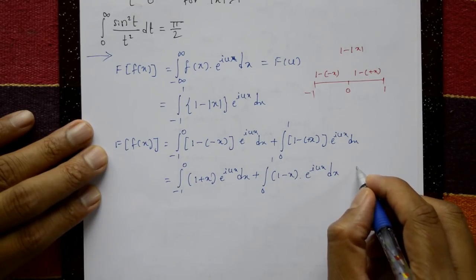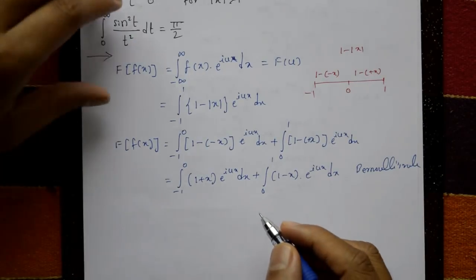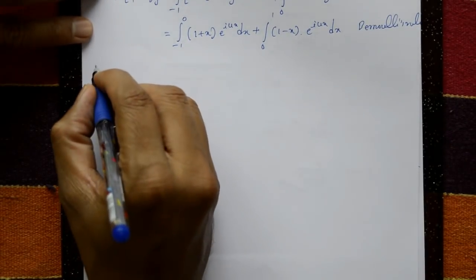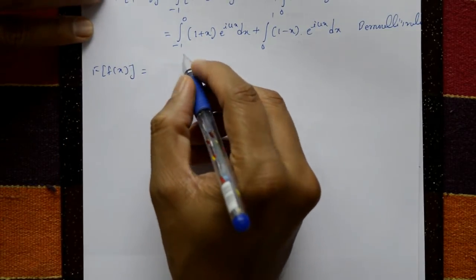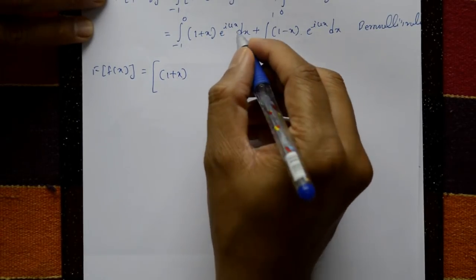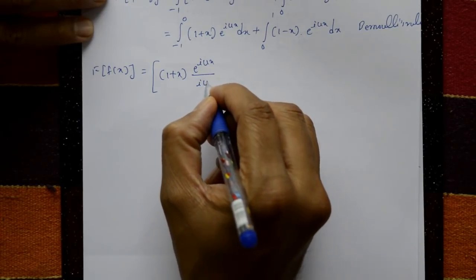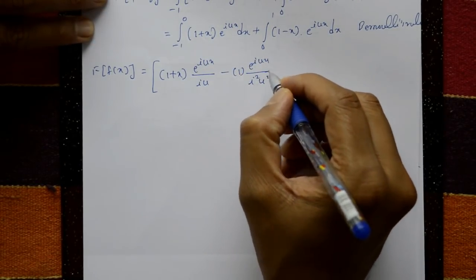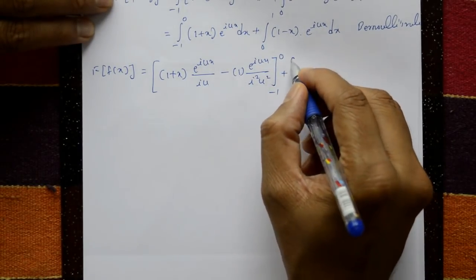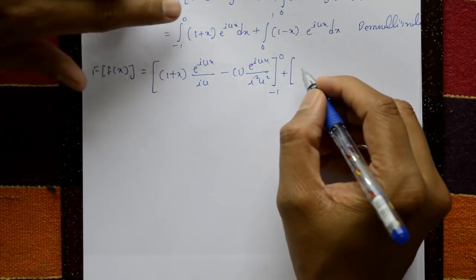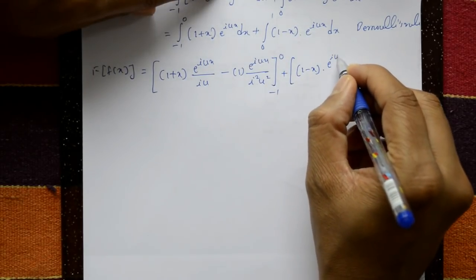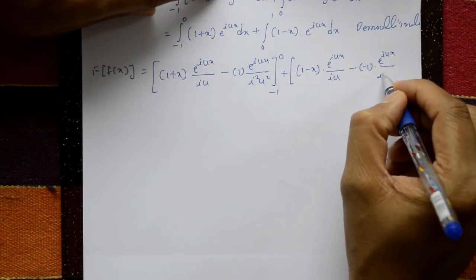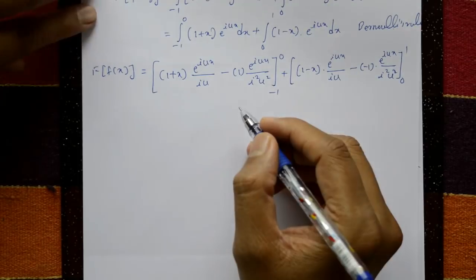Now applying Bernoulli's rule to both terms. For the first term: (1 + x) into e raised to i·u·x divided by i·u, minus the derivative (which is 1) into e raised to i·u·x divided by i²·u², with limits minus one to zero. For the second term: (1 minus x) into e raised to i·u·x divided by i·u, minus the derivative (which is minus 1) into e raised to i·u·x divided by i²·u², with limits zero to one.